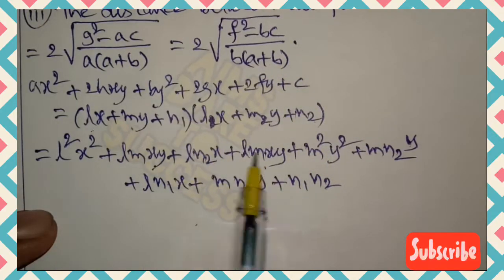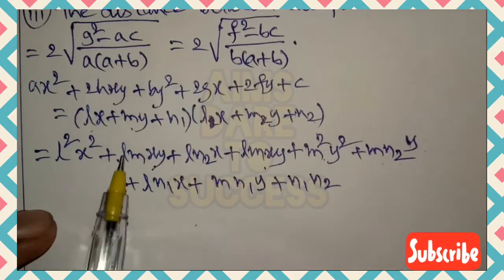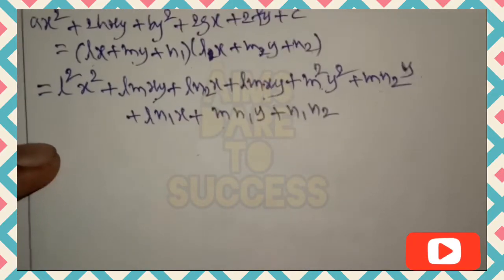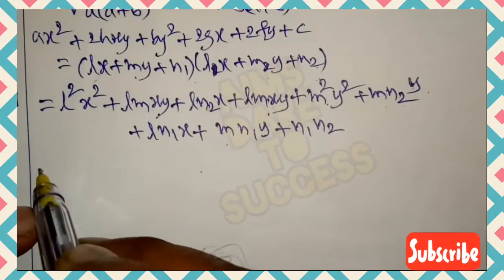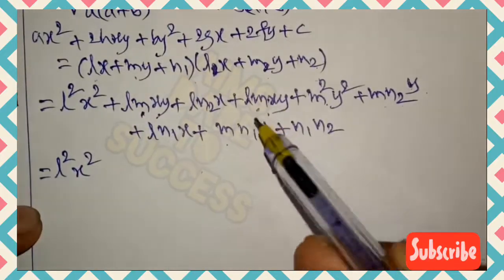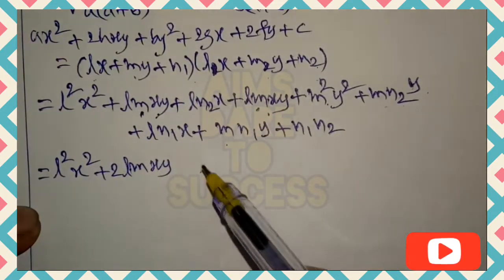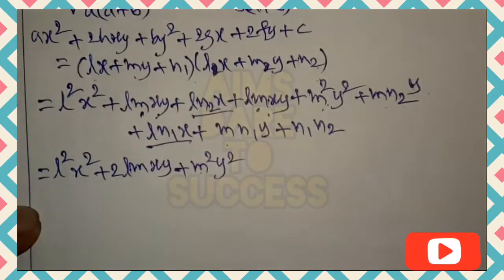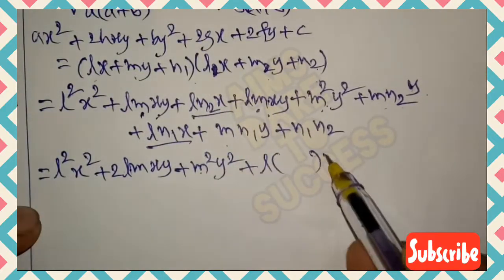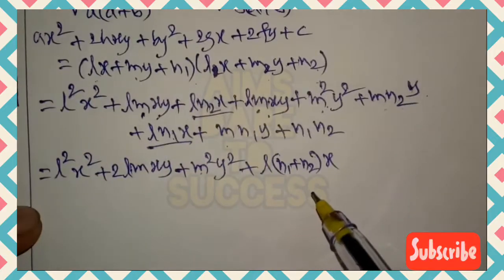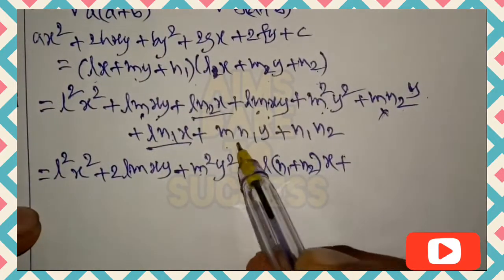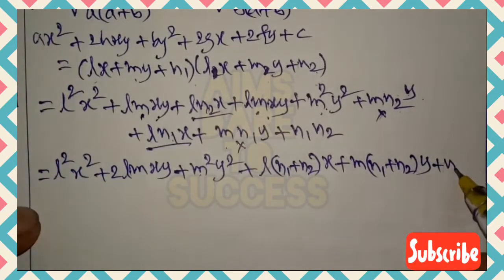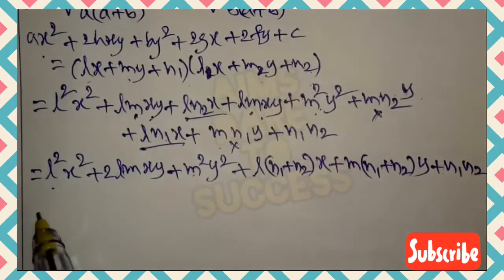Multiplying out (lx + my + n₁)(lx + my + n₂), we get: l²x² + lmxy + ln₂x + lmxy + m²y² + mn₂y + ln₁x + mn₁y + n₁n₂. Collecting like terms: x² term is l²x²; xy term is 2lmxy; y² term is m²y²; x terms give l(n₁+n₂)x; y terms give m(n₁+n₂)y; and constant is n₁n₂.